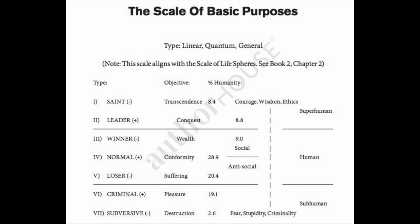Most people know Hitler was a criminal — he displayed the same behaviors seen in professional criminals like Vito Genovese. Now, notice on the scale at the extreme right it says superhuman, human, and subhuman. These levels break down into three categories: superhumans at the top, humans in the middle, and subhumans at the bottom. Superhumans have abilities that the rest of us do not have.